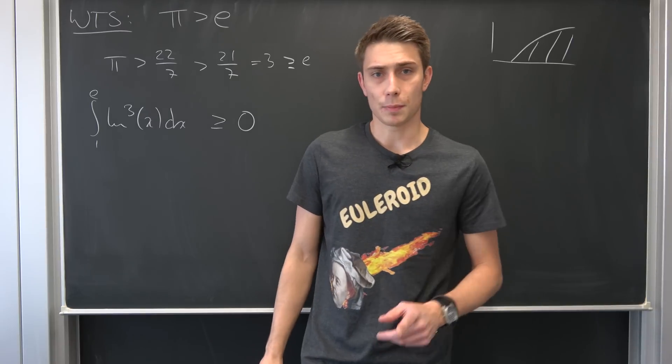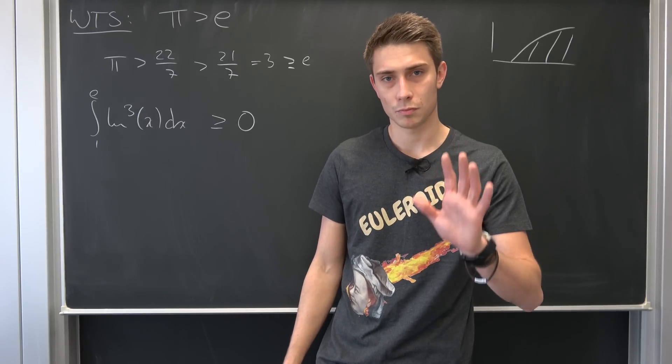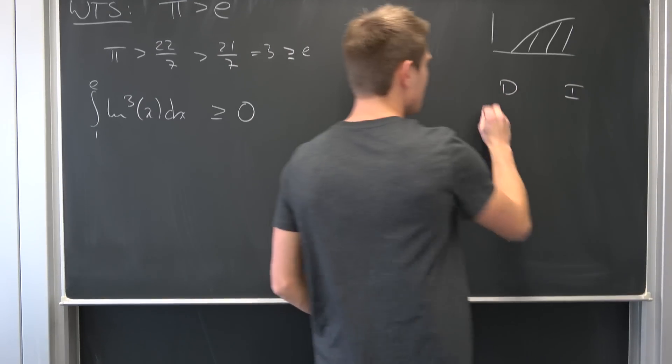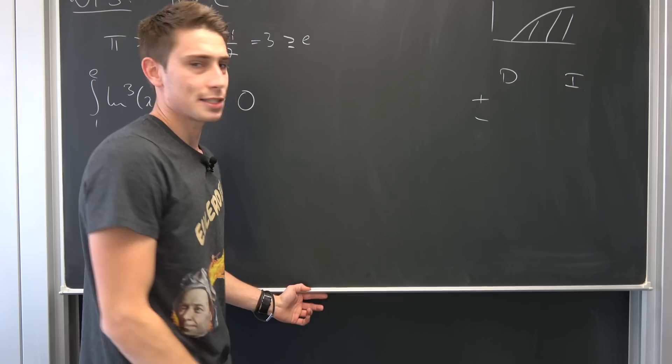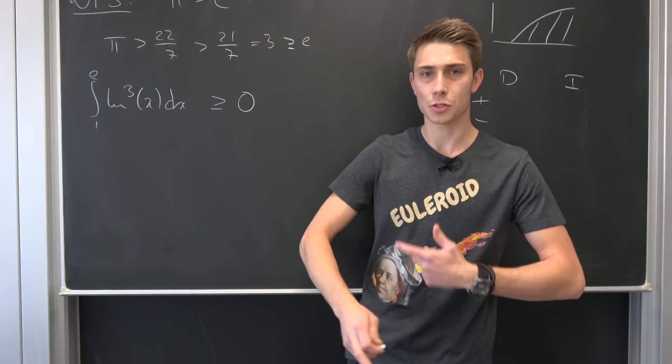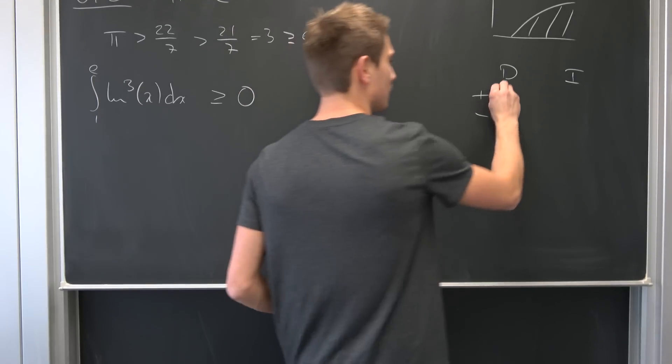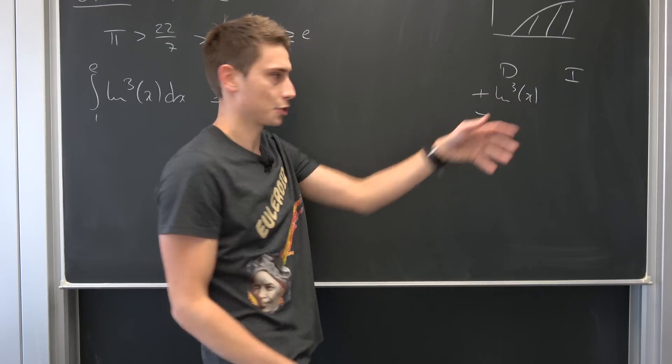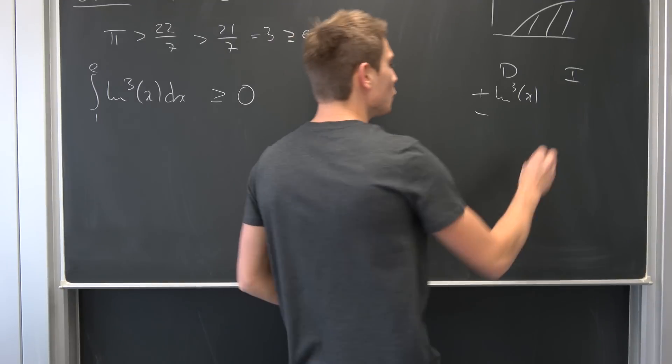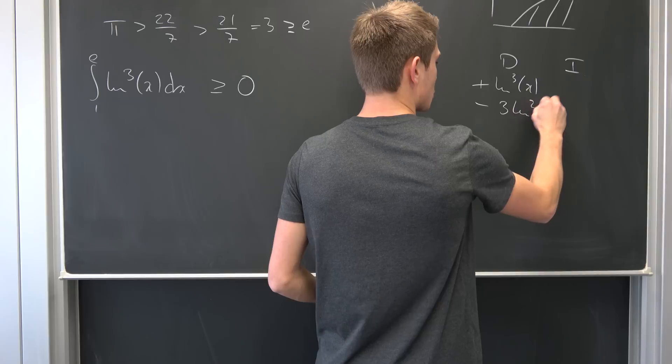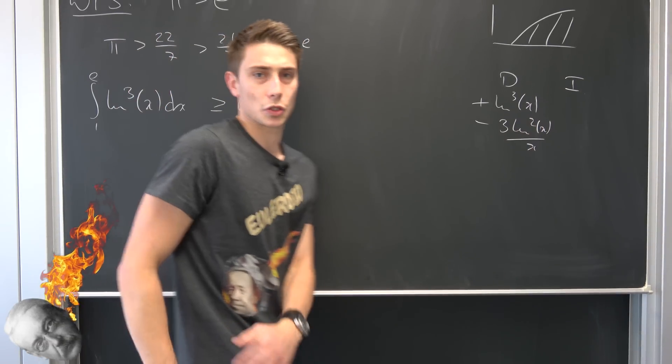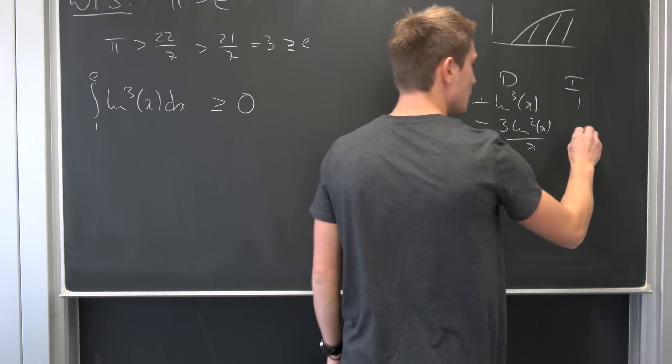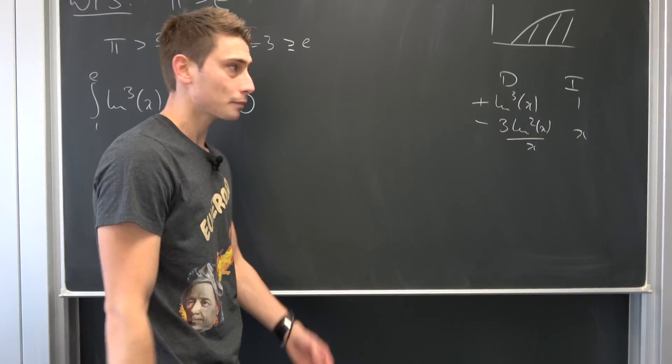We have to do integration by parts several times. It's quite painful, but it's easy. So we need something to differentiate and something to integrate plus minus and you see we don't know how to integrate natural log cubed. So why not differentiate that? Well, natural log cubed of x. And if we differentiate that, well just use the power rule and then the chain rule, the chain rule. This is going to be 3 ln squared of x over x. And what do we want to integrate? Well, something is just 1 times something. So we are going to integrate 1. This is going to be x.